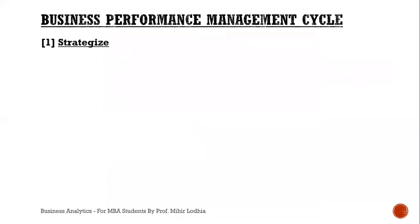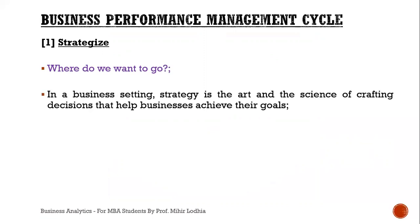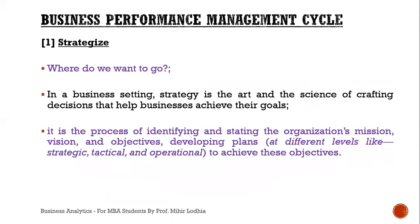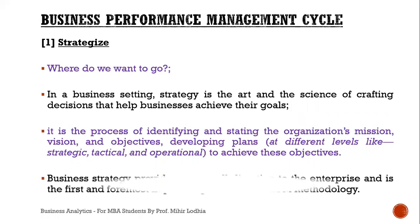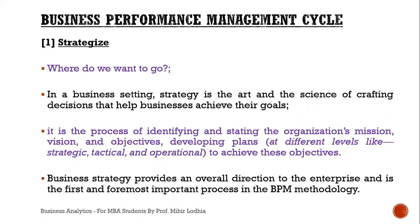Let's look at each stage one by one. First, strategize — the question to answer here is: where do we want to go? In a business setting, strategy is the art and science of crafting decisions that help a business achieve its goals. It is the process of identifying and setting the organization's mission, vision, and objectives, and developing plans at strategic, technical, and operational levels. Business strategy provides an overall direction to the enterprise and is the foremost important process in business performance management methodology.